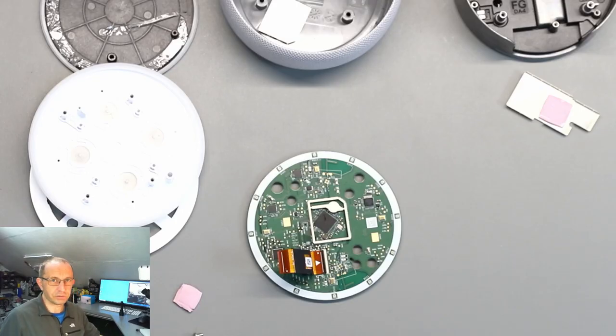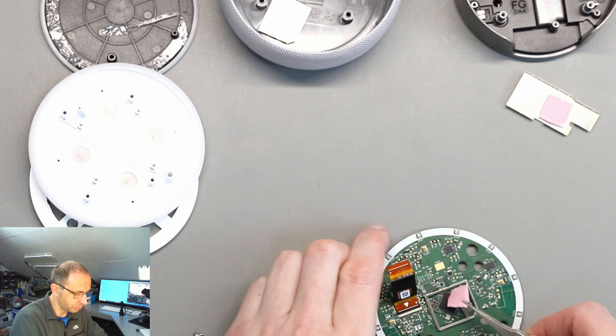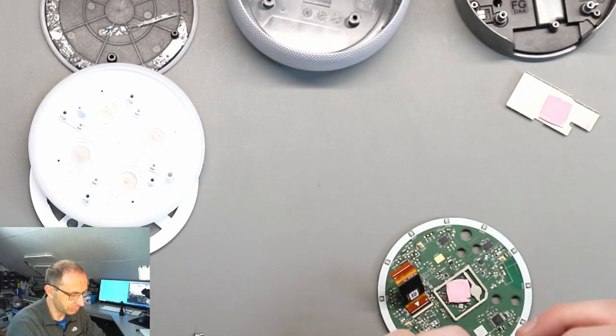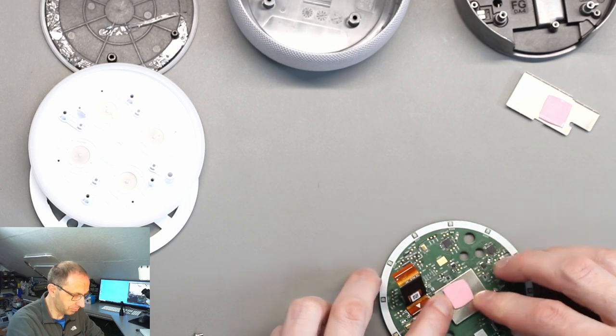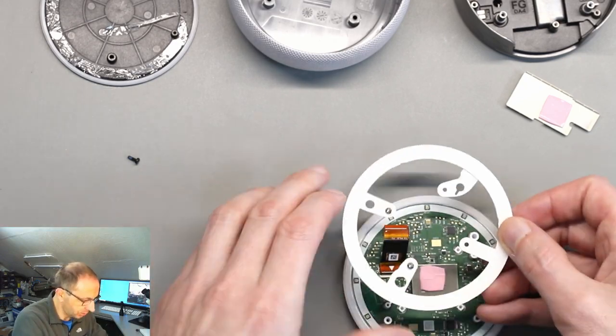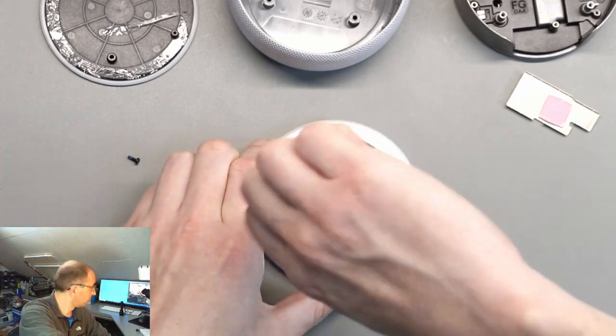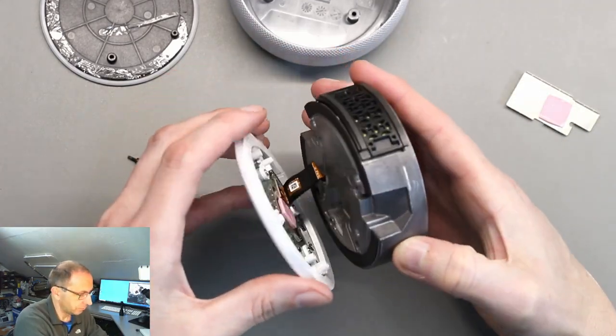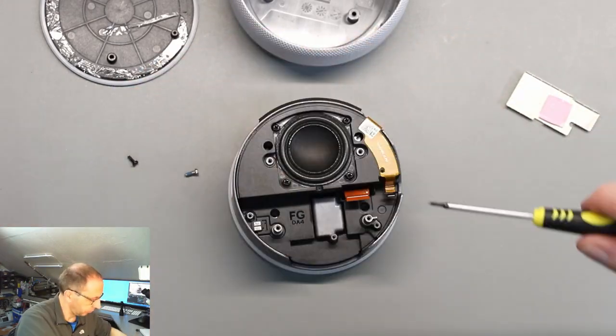The reassembly of the device is just the reverse of the disassembly. So we'll start off putting the heat pad back on the central WiFi chip. And then the metal can which buckled a bit when it came apart. It'll be close.